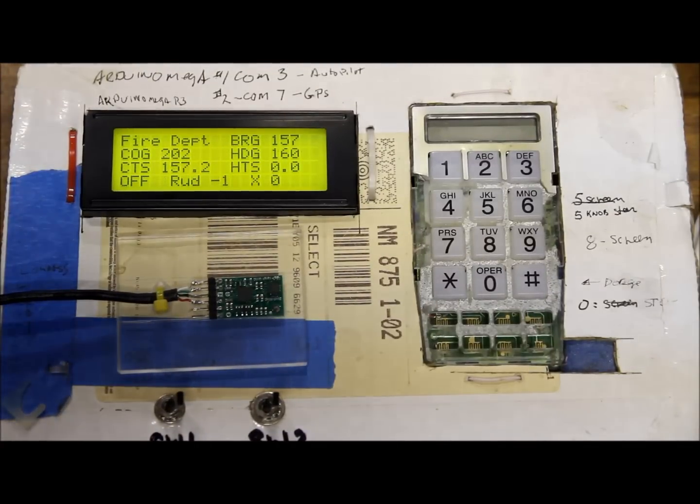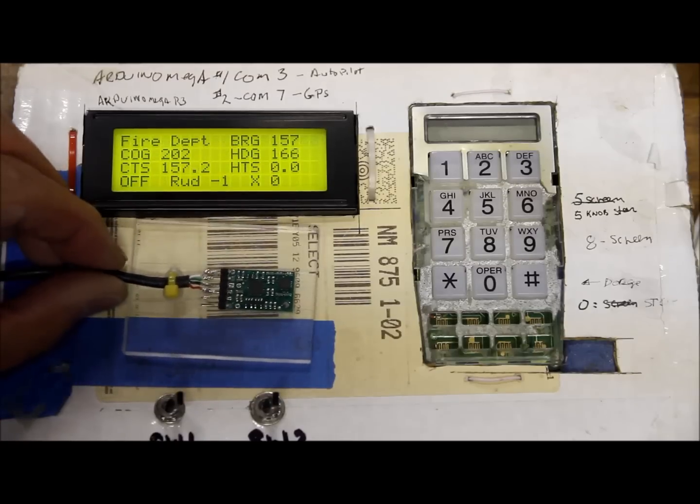So we have manual steering. We also have compass steering and GPS steering. I'll show you the compass steering first. This is the compass I use. It's a gyro compass. It's made by Pololu. That's about a $40 item.